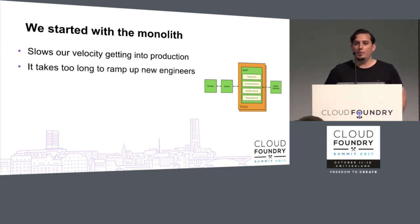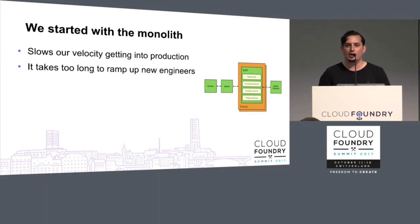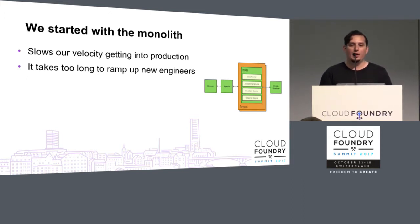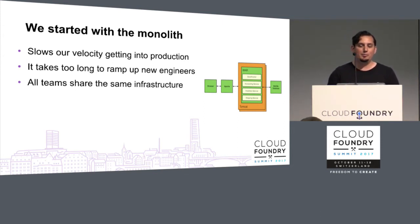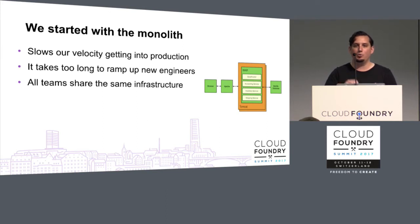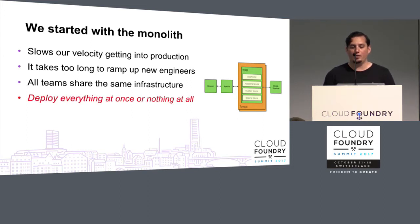It also takes way too long to ramp up new engineers. With microservices, it's ideal to add an engineer to a project, have them reason about that source code within a day and be able to work with it — as opposed to a million lines of code where it takes much longer before they feel safe making changes. All teams share the same infrastructure: one production environment, one way to get to production. If I change one single line of code, I have to deploy everything or nothing at all. That's the main issue with monoliths.